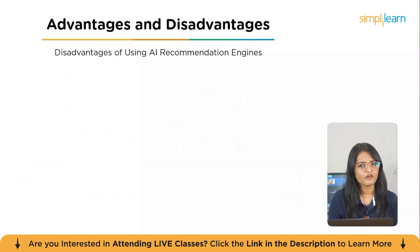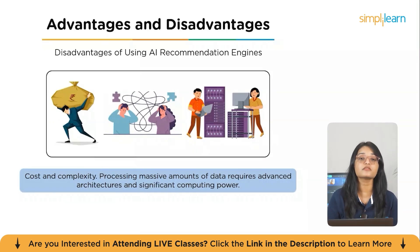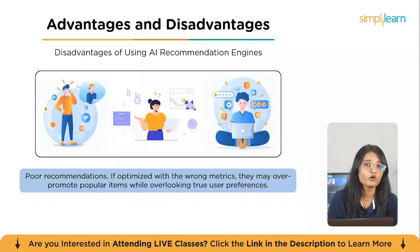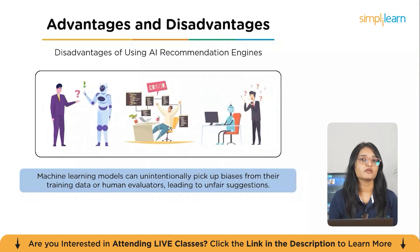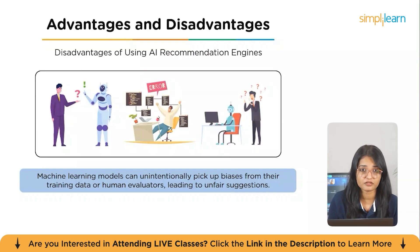There are disadvantages too. Cost and complexity — processing massive amounts of data requires advanced architectures and significant computing power. Poor recommendations — if algorithms are optimized with the wrong metrics, they may over-promote popular items while overlooking true user preferences. And biasness — machine learning models can unintentionally pick up biases from their training data or human evaluators, leading to unfair or misleading suggestions.